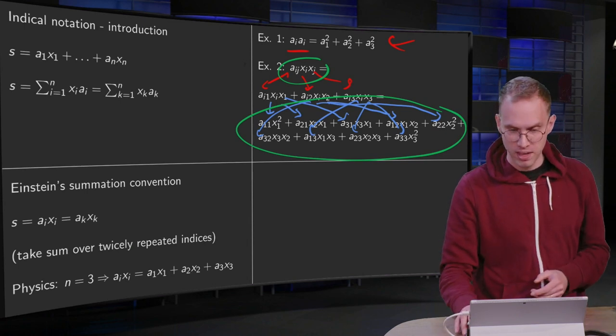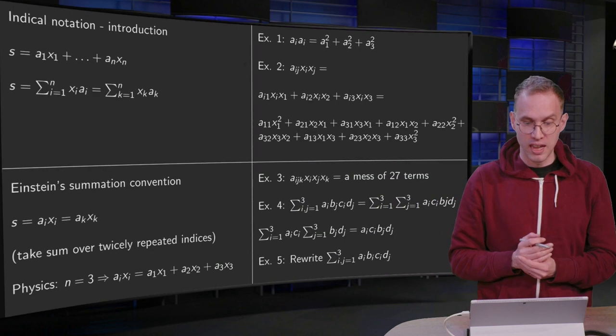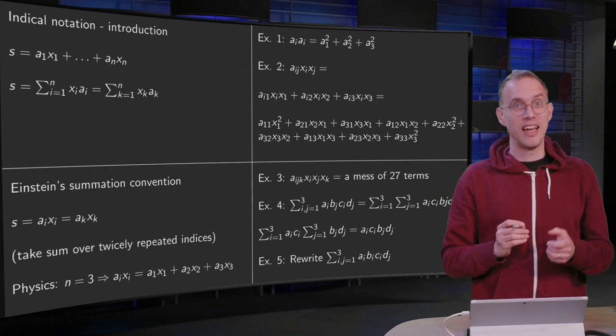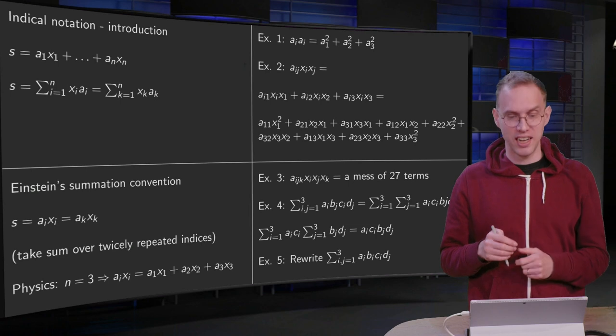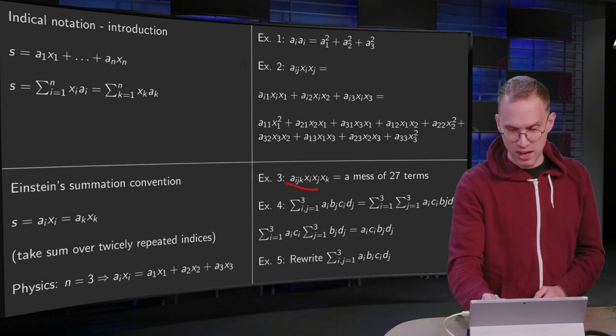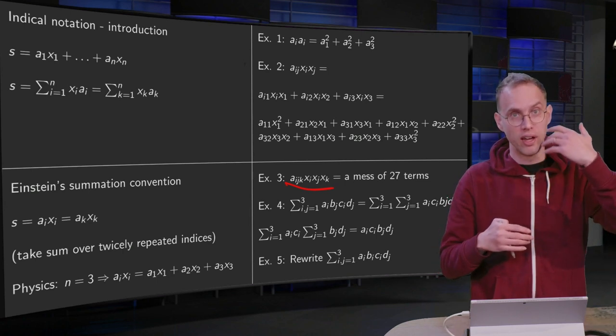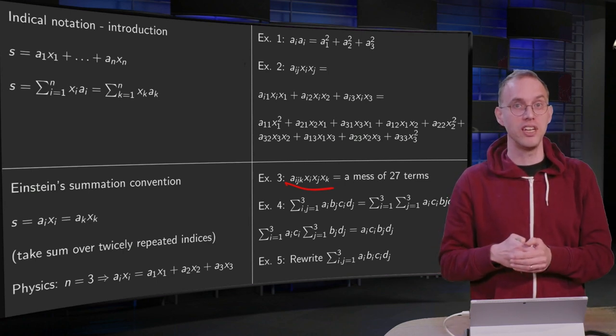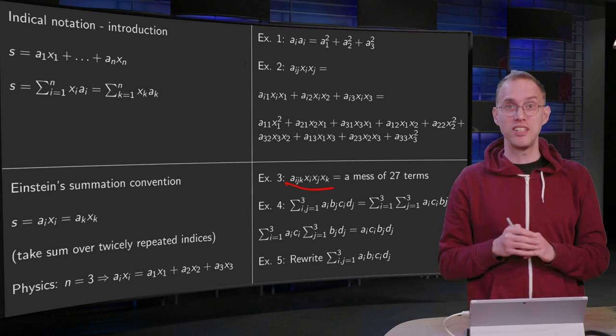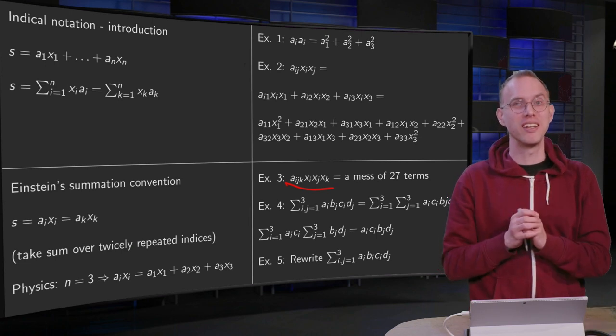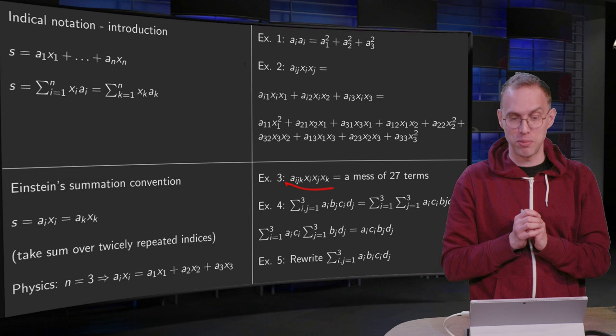This is the third example. Can we make it even worse? Oh yeah, of course we can take three indices, i, j and k. So something like this: aᵢⱼₖxᵢxⱼxₖ. We have to sum i, j and k from 1 to 3, so we get a total mass of 27 terms. Feel free to write it down. I'm not going to do it because it becomes a big mass.